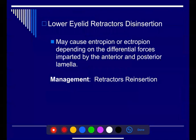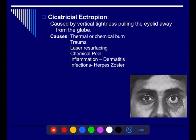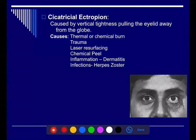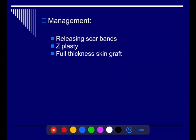Lower eyelid retractor disinsertion may cause entropion or ectropion depending on the differential forces imparted by the anterior and posterior lamella. The management is retractor reinsertion. Cicatricial ectropion is caused by vertical tightness pulling the eyelid away from the globe. Causes include thermal or chemical burn, trauma, laser resurfacing, chemical peel, and inflammation like dermatitis or herpes infection. Treatment involves assessing the scar and planning a graft — either full-thickness skin graft if only the anterior is affected, or combined graft if both lamellae are involved. Z-plasty works for localized areas.